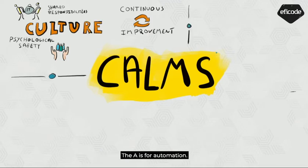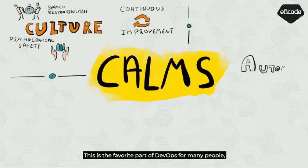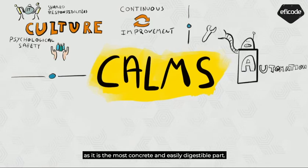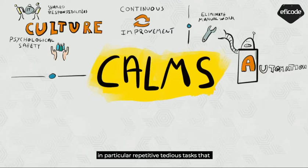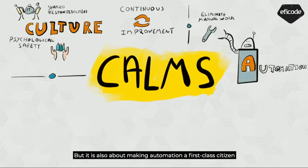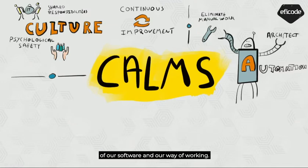The A is for Automation. This is the favorite part of DevOps for many people, as it is the most concrete and easily digestible part. Automation is about seeking out opportunities to eliminate manual work, in particular repetitive tedious tasks that destroy the happiness of engineers. But it is also about making automation a first-class citizen of our software and our way of working.